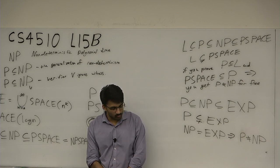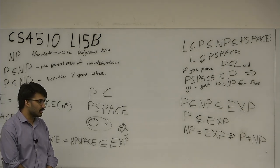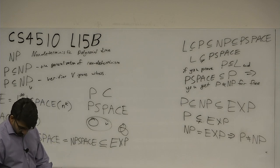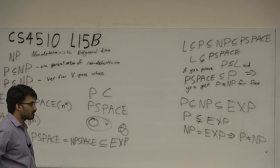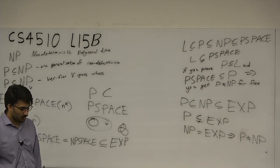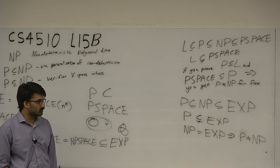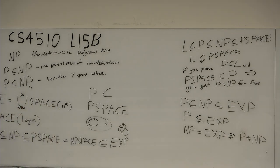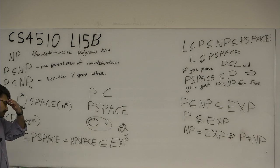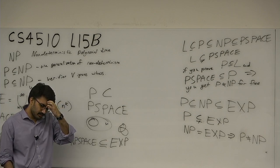We were able to define these classes, and then we weren't able to do anything about it — we were just able to say they have some loose containments, but we couldn't say those containments were strict. We were able to do a hierarchy with regular languages and context-free languages and separate them quite well. We have no ability to separate any of these complexity classes. All the problems are related, perhaps not bi-directionally. Everything is connected, and that's what makes the theory beautiful — it's really hard, and we don't know the answers.